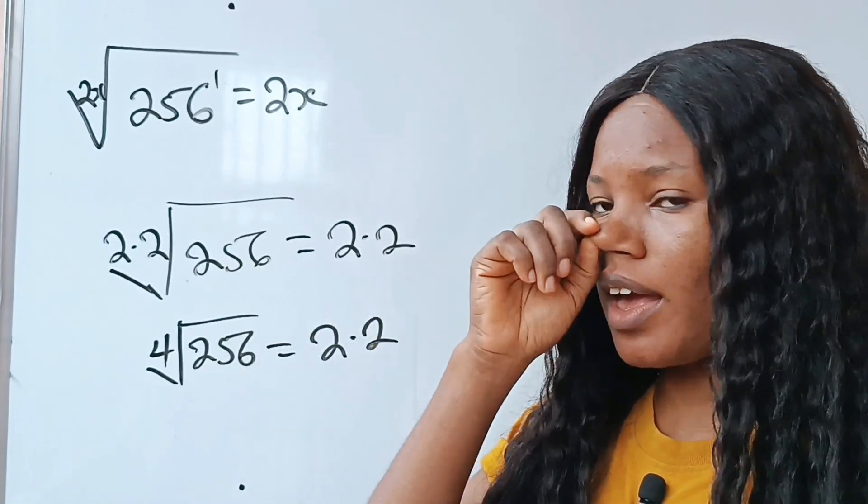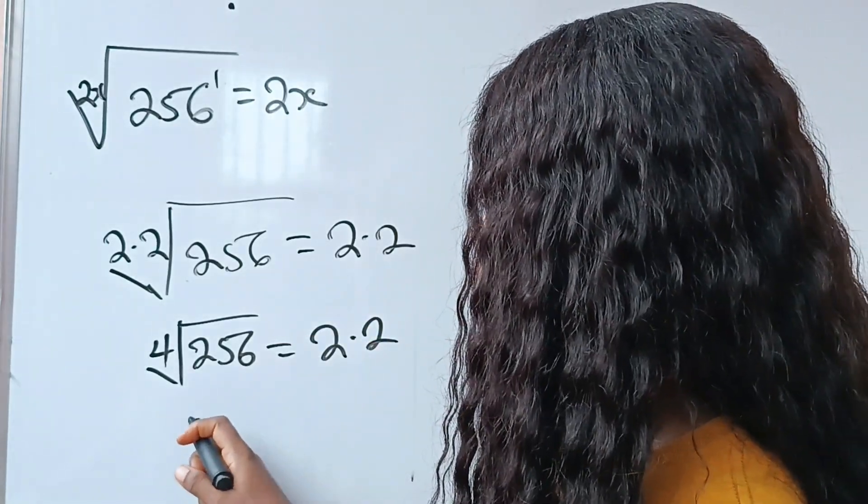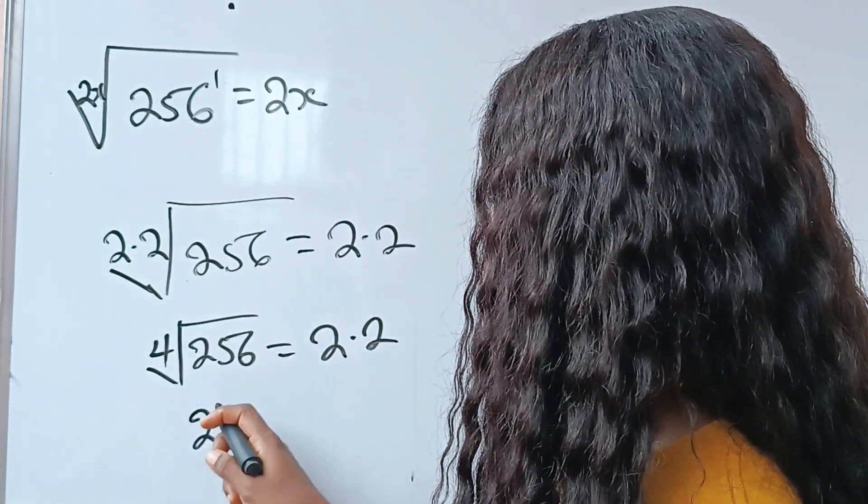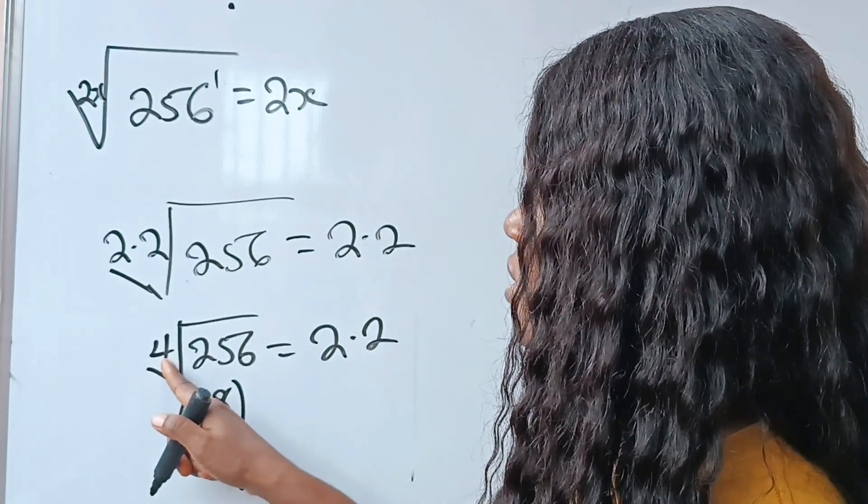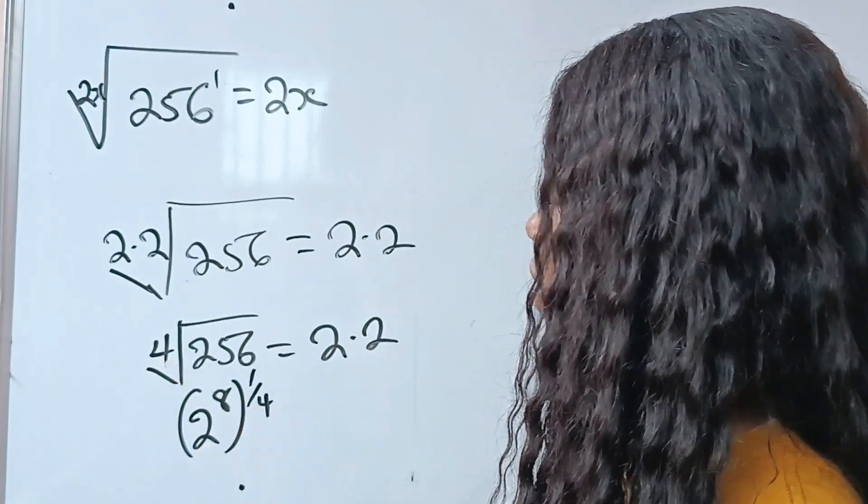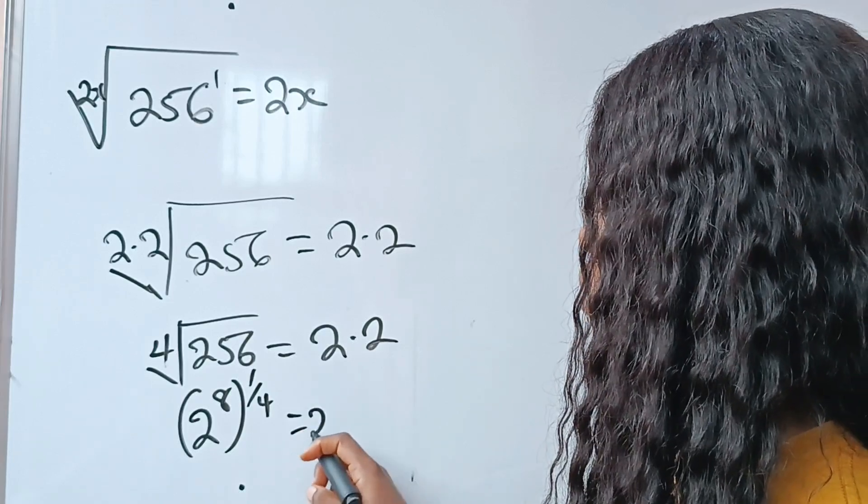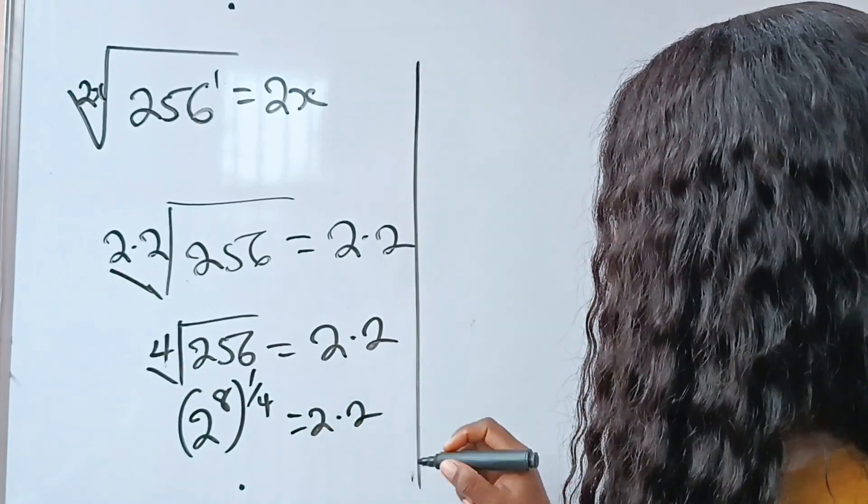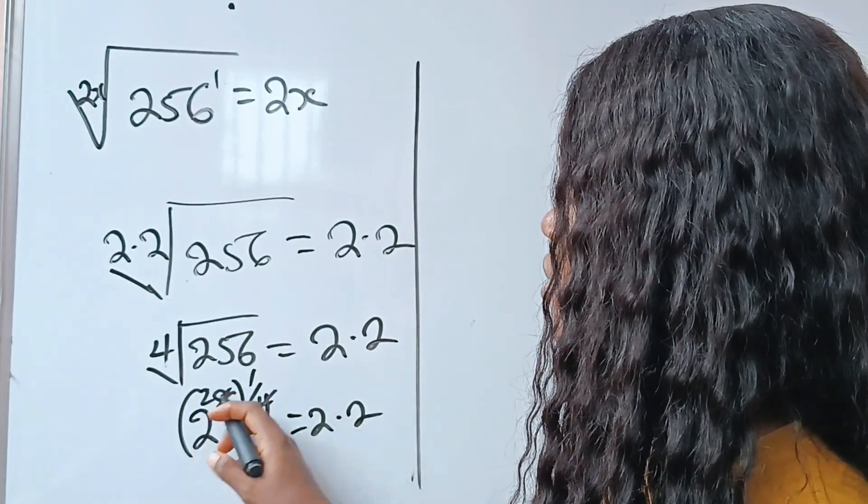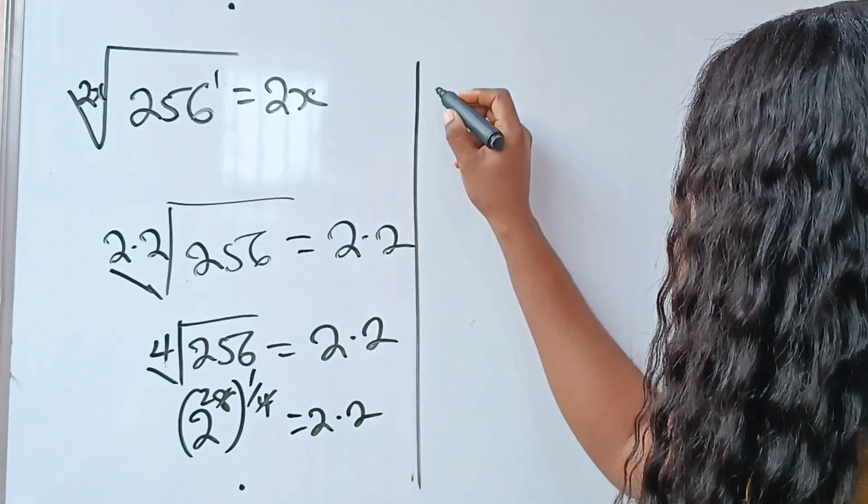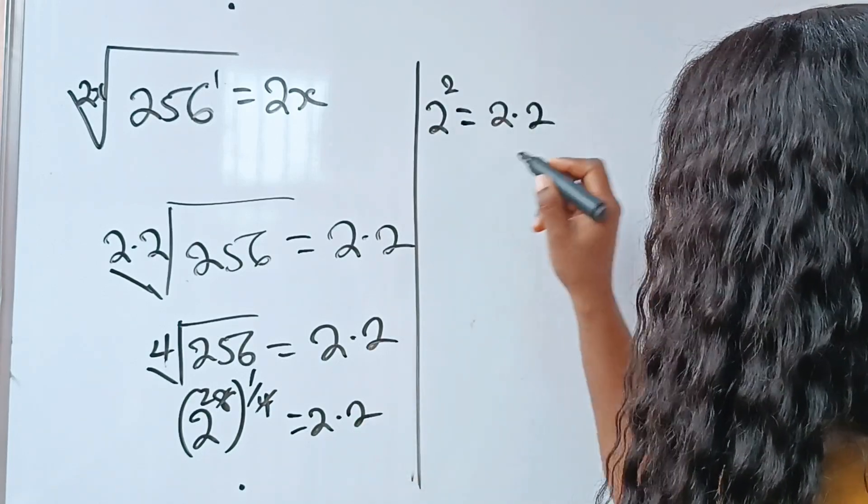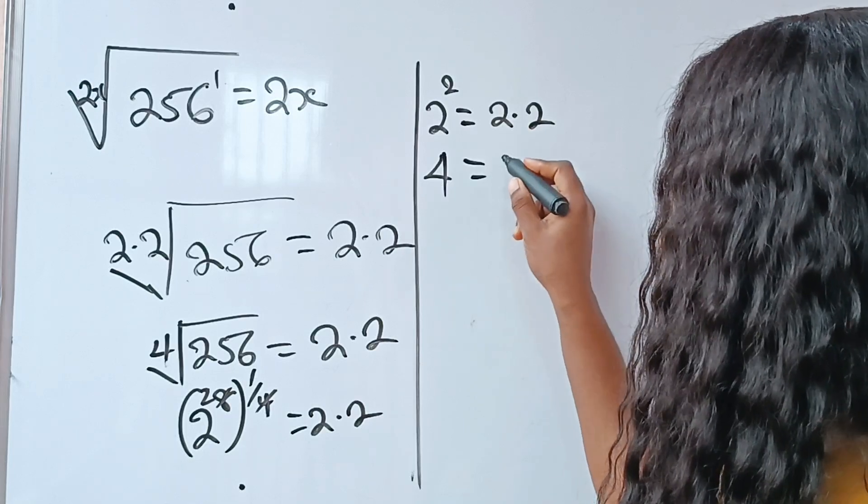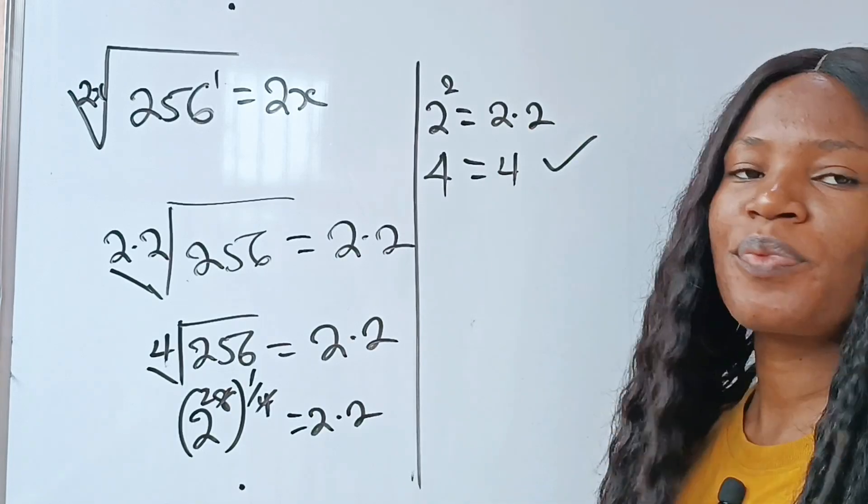Now, 4th root of this is the same thing as 2 to the power of 8 raised to the power of 1 over 4, since this is 4th root, which is equal to 2 multiplied by 2. Now, when we divide this, we have 2. So this simply means 2 to the power of 2 is equal to 2 multiplied by 2. And we have that 4 is equal to 4. Perfect.